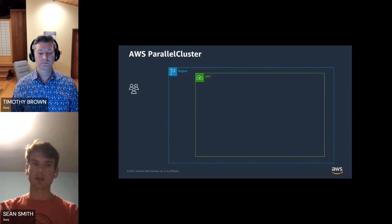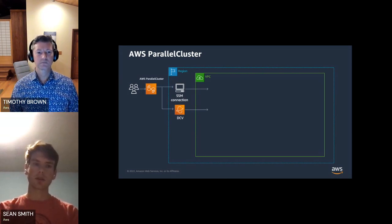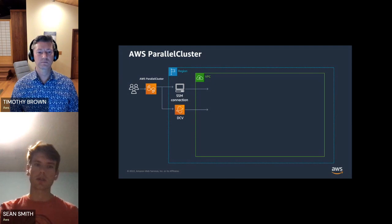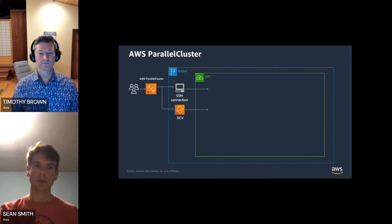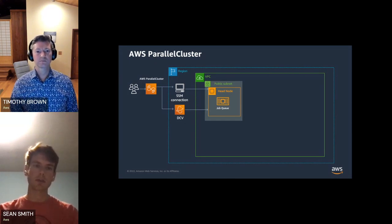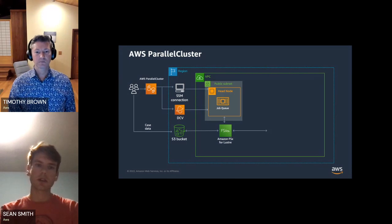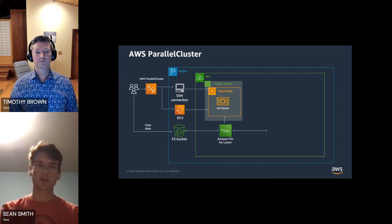Parallel Cluster is the glue that brings everything together. The cloud has a bunch of building blocks, but the challenge is bringing them into an HPC infrastructure without becoming a cloud expert — that's what Parallel Cluster addresses. It gives you two ways to connect: normal SSH or SSM (basically equivalent), or a remote desktop via DCV — really useful for visualizing results and doing preprocessing. This connects you to a head node running a standard Slurm scheduler with the same commands you've used on any Slurm research cluster.